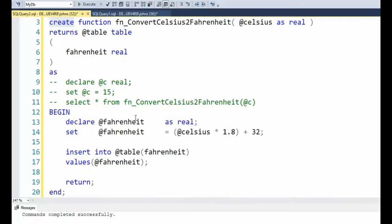In this example, you can see that I'm creating a table value function, create function, function name. I have one input parameter at Celsius, and it will return a table and its name is at table. This table is defined to have one column called Fahrenheit. So I come down to begin and I declare my variable and then I do the math. And then after it renders me the Fahrenheit, I insert that into this table.